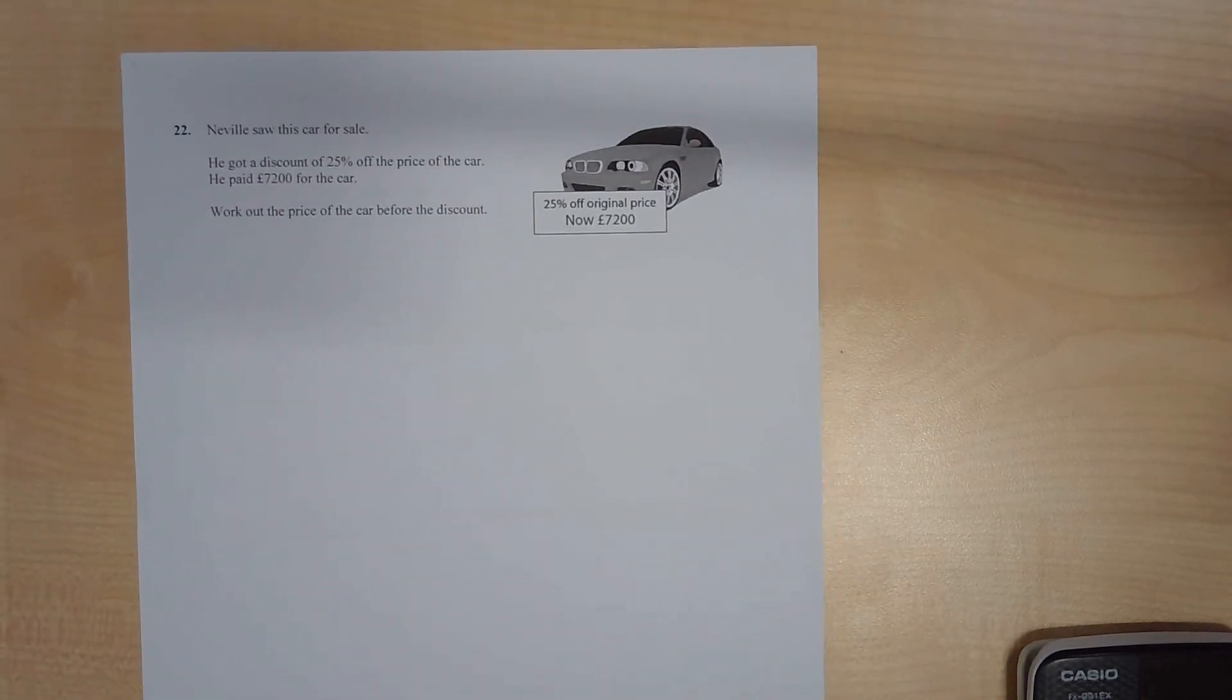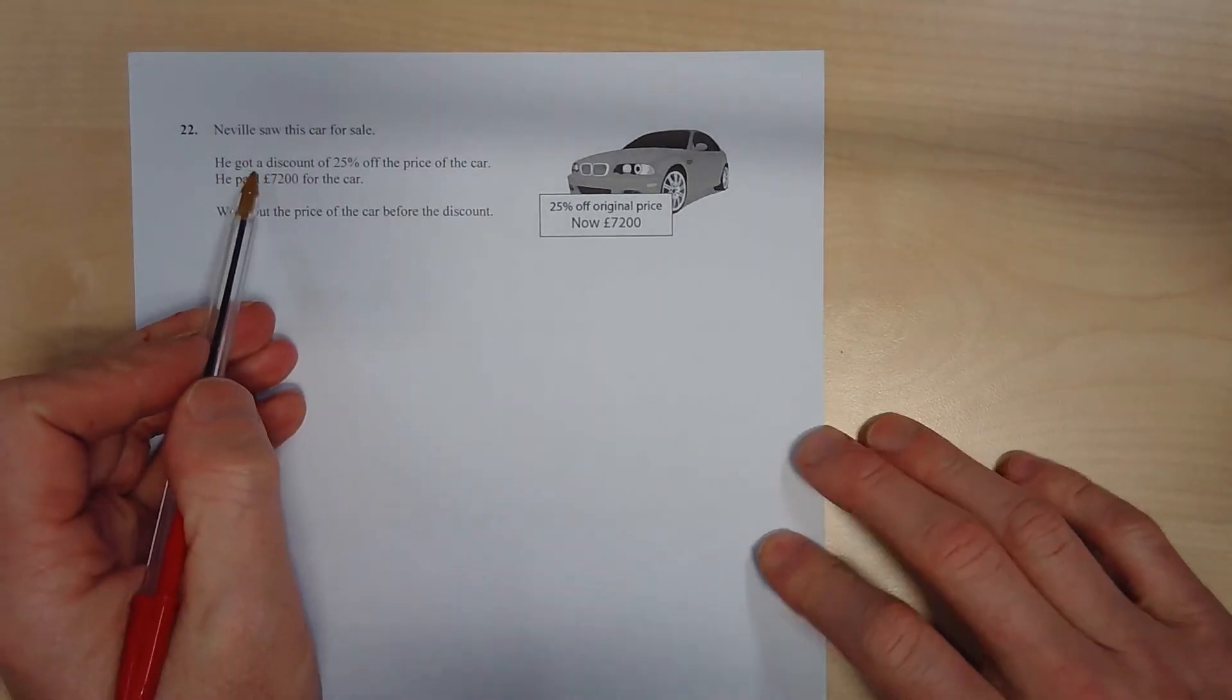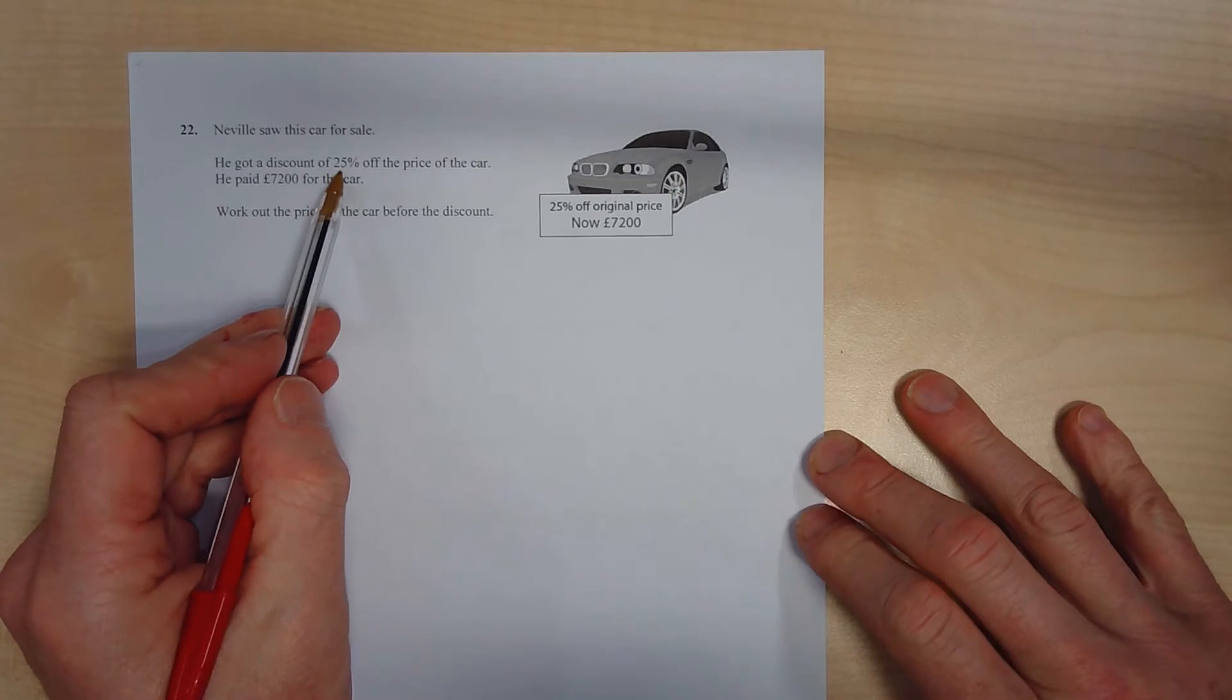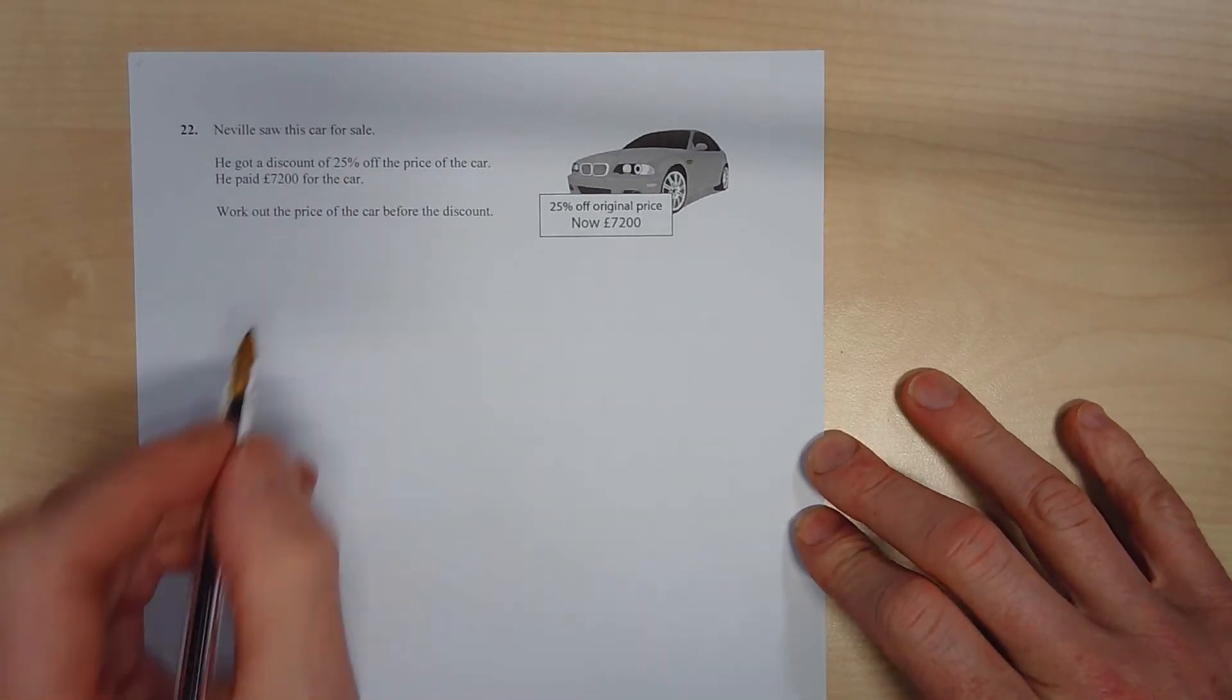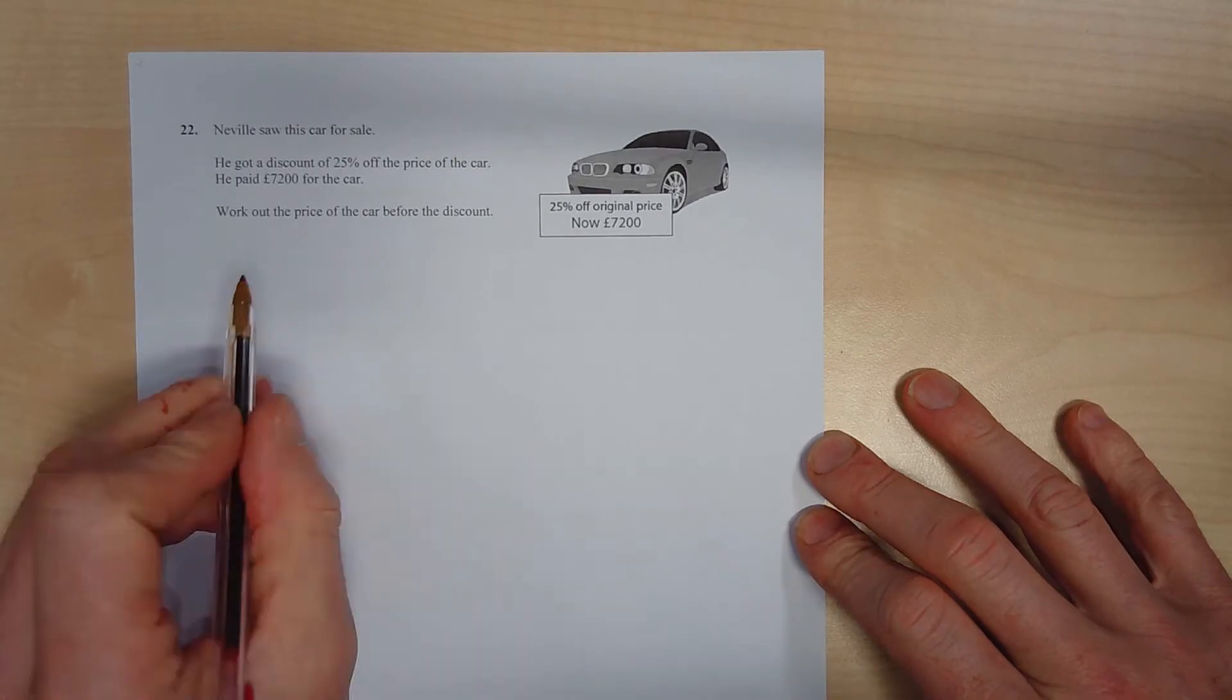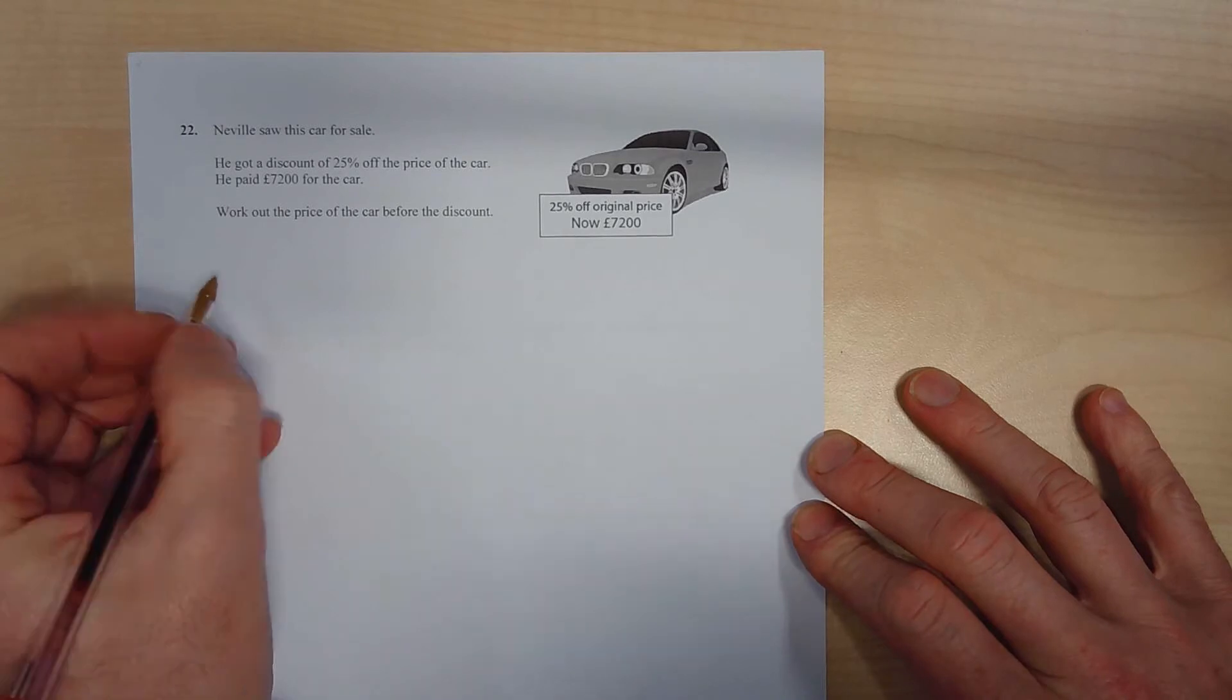So if it belongs to B but it doesn't belong to A, it just must be the numbers 3 or 9. That's where that question finishes there. Okay, question 22. Bring it down a minute. Okay, so this is a reverse percentage.